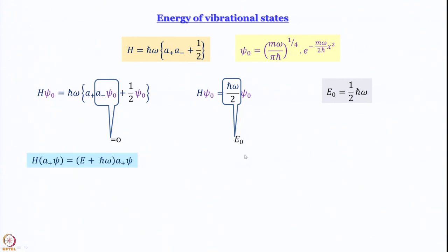Now, using the step-up operator a_plus on ψ_0 gives ψ_1 — the wave function one step above ψ_0 in energy. E_1 = E_0 + ℏω = (1/2)ℏω + ℏω = (3/2)ℏω, which we write as (1 + 1/2)ℏω. Similarly, E_2 = E_1 + ℏω = (1 + 1/2)ℏω + ℏω = (2 + 1/2)ℏω. Even though we have not yet worked out the higher energy wave functions explicitly, we have already been able to work out the energies.